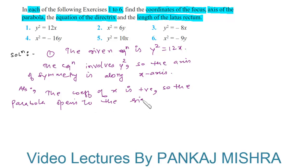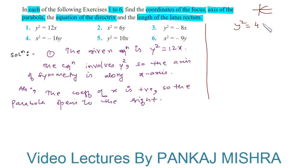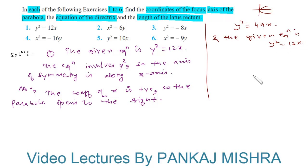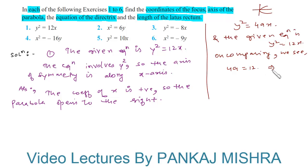The standard form of a parabola which opens to the right and is symmetric along the x-axis is given by y² = 4ax. The given equation is y² = 12x. On comparing both equations, we see that 4a = 12, which implies a = 3.